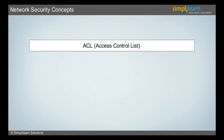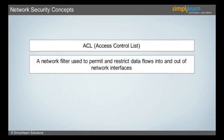Let's begin the discussion with ACL — Access Control List. ACLs are the network filters utilized by routers and some switches to permit and restrict data flows into and out of network interfaces. A network filter refers to the ability of monitoring the data flow of a system.